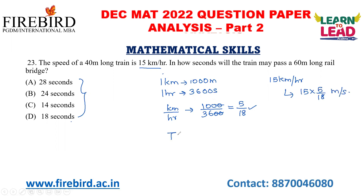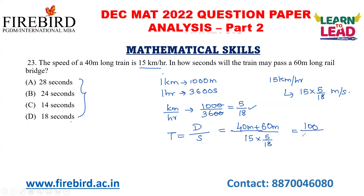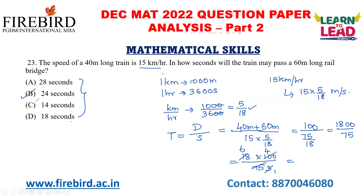Time equals distance divided by speed. The distance is the length of the train plus the length of the bridge: 40 plus 60 equals 100 meters. Divided by the speed, 15 into 5 by 18, giving 100 divided by 75 by 18, which equals 1800 divided by 75. Simplifying: 18 into 100 divided by 75. Cancelling gives 24 seconds as your answer.